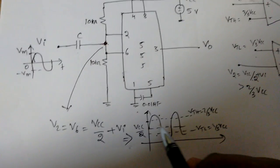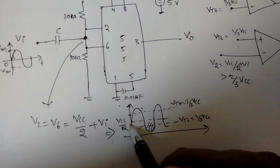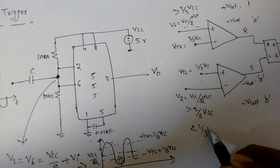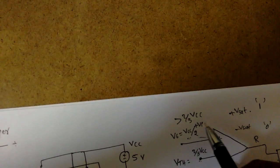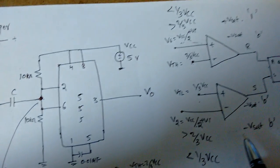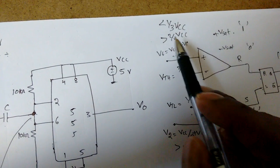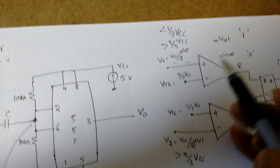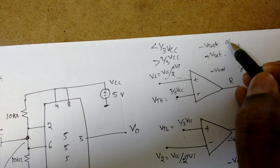Now the moment it is negative half cycle, that is less than 1 by 3 VCC. So now what will happen we will see. V2 is less than 1 by 3 VCC, similarly V6 also less than 1 by 3 VCC. So in this case what will happen? Plus is given to less than 1 by 3 VCC, minus is at 2 by 3 VCC. That means minus is greater, so minus Vsat, that is logic 0.